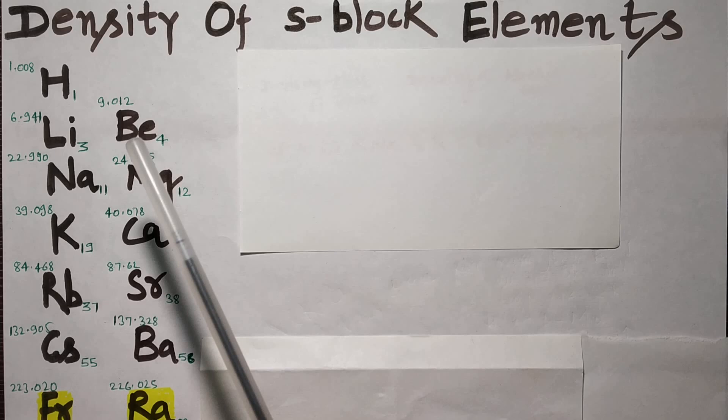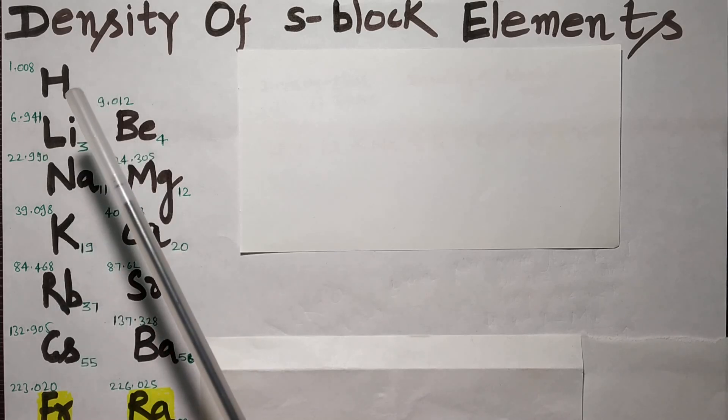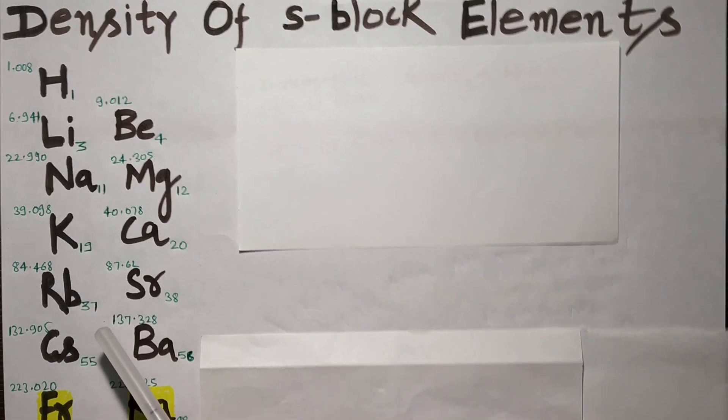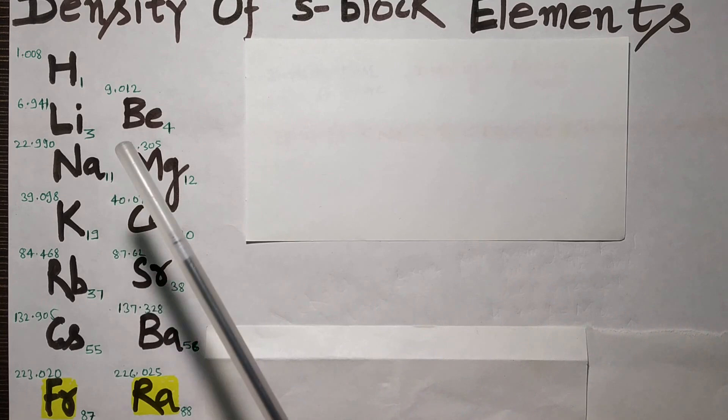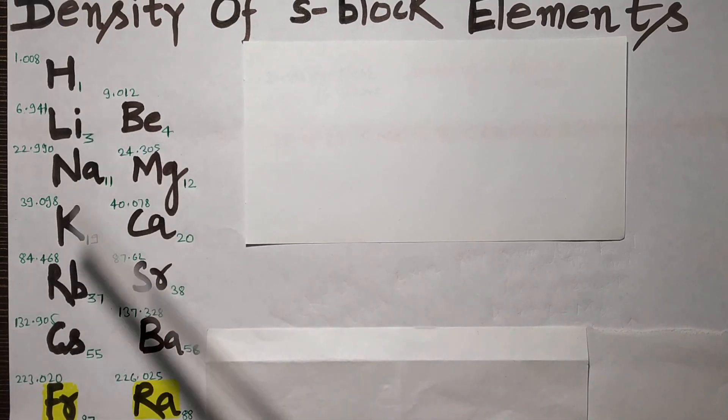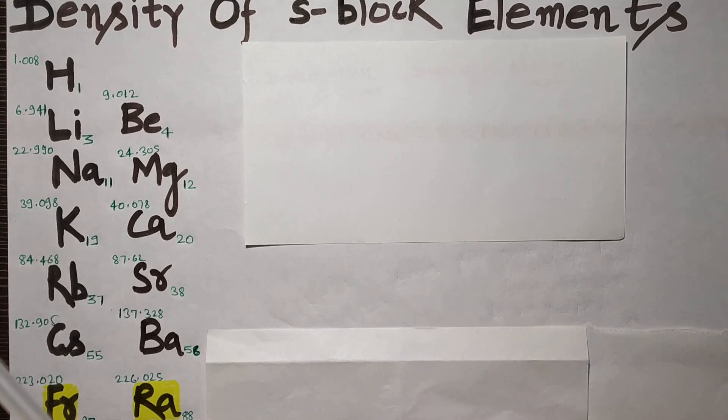Alkali metals consist of hydrogen, lithium, sodium, potassium, rubidium, cesium, and francium. So basically, what is the trick to remember all these elements of alkali metals?